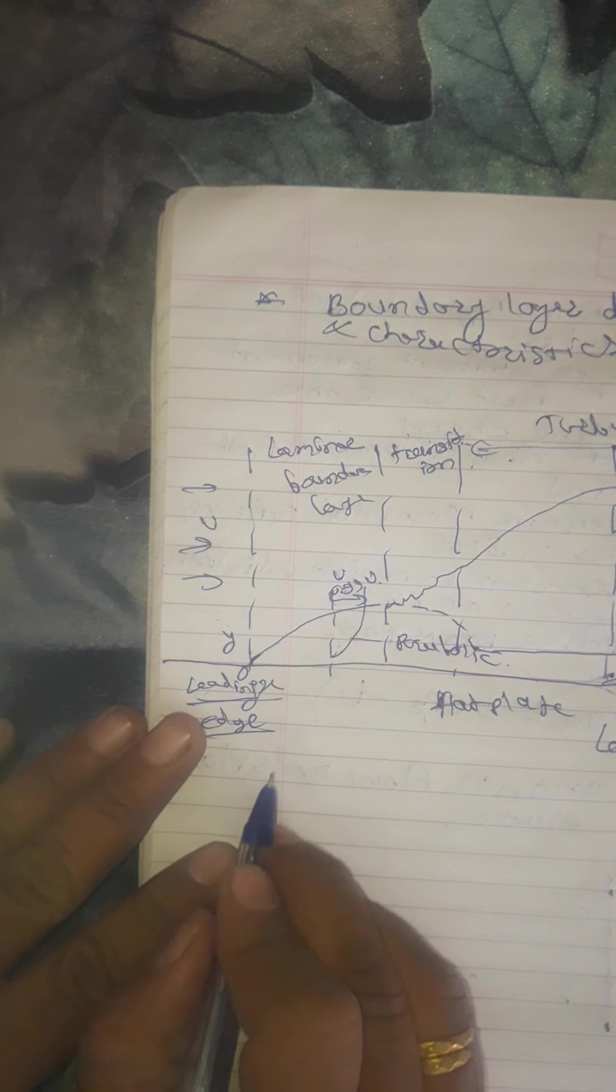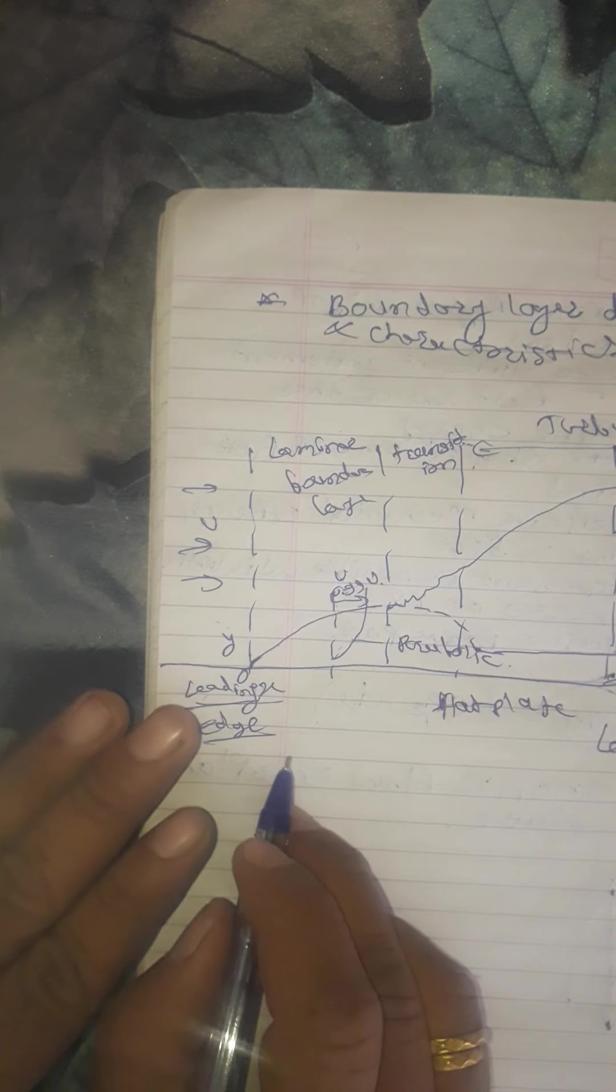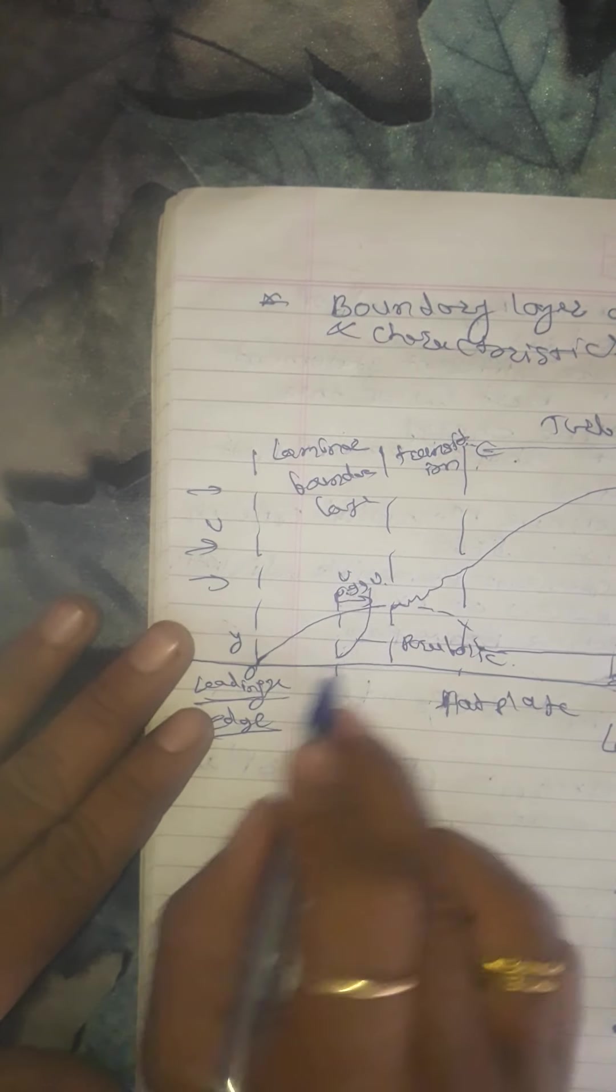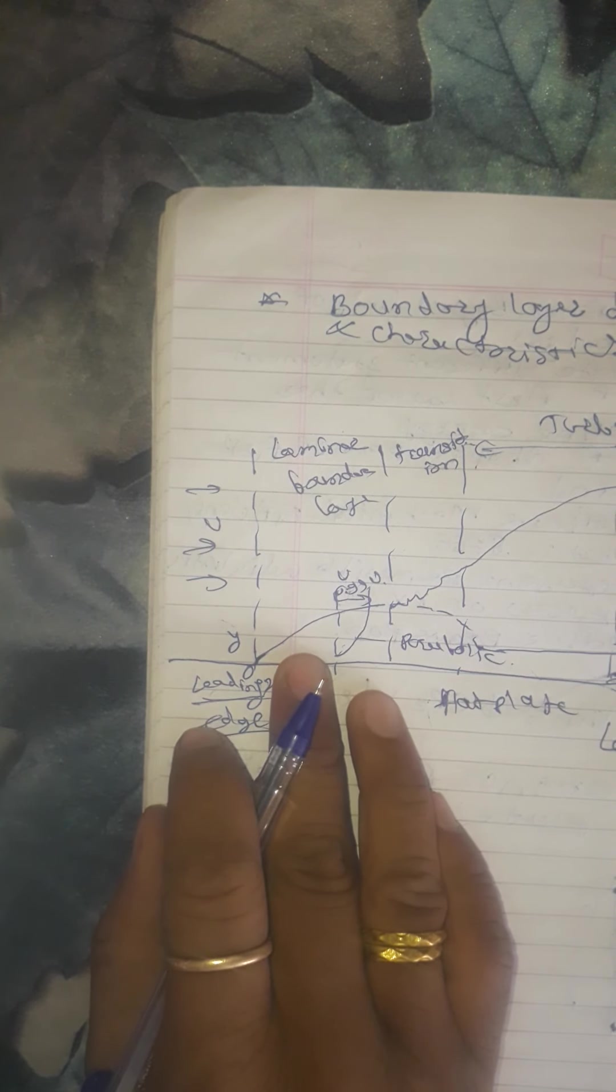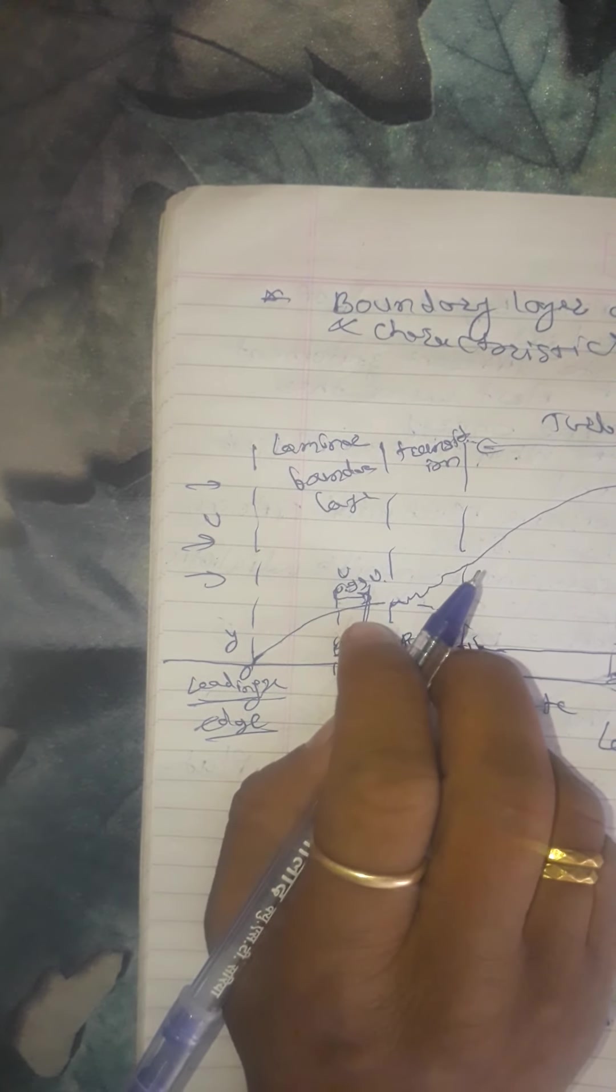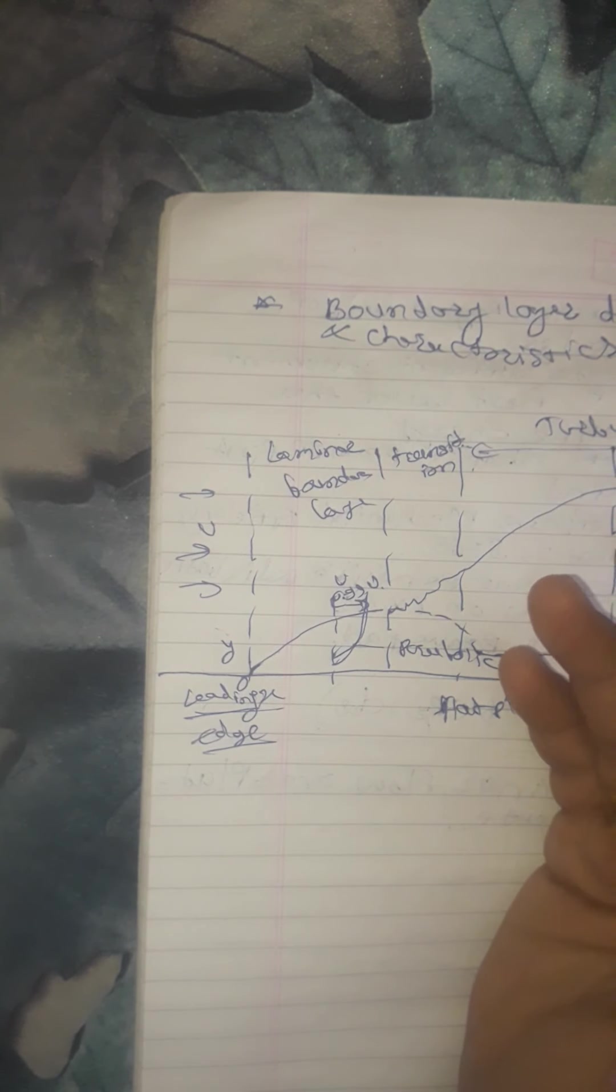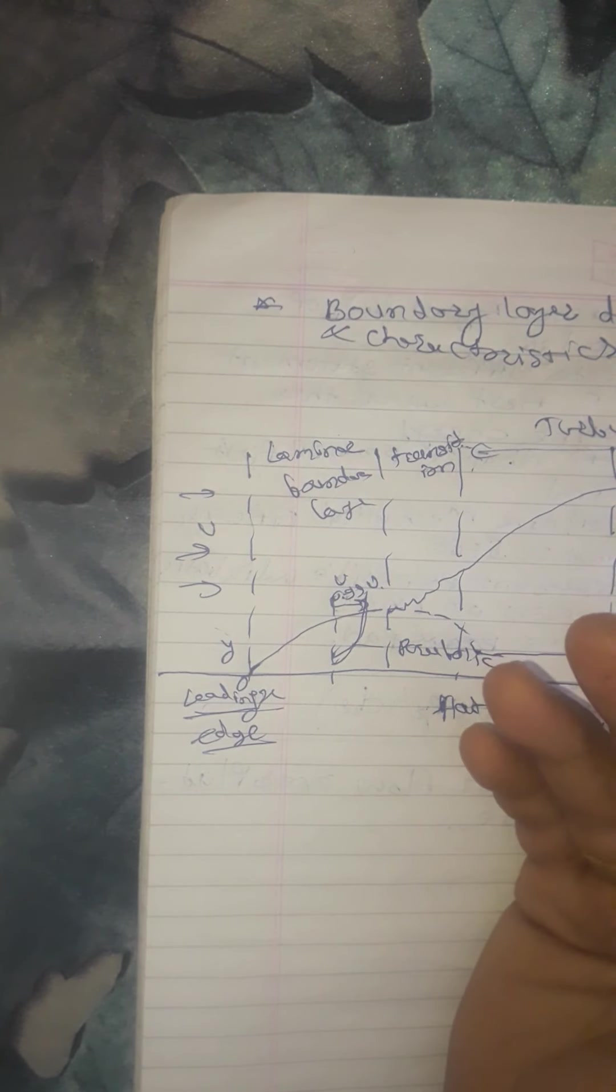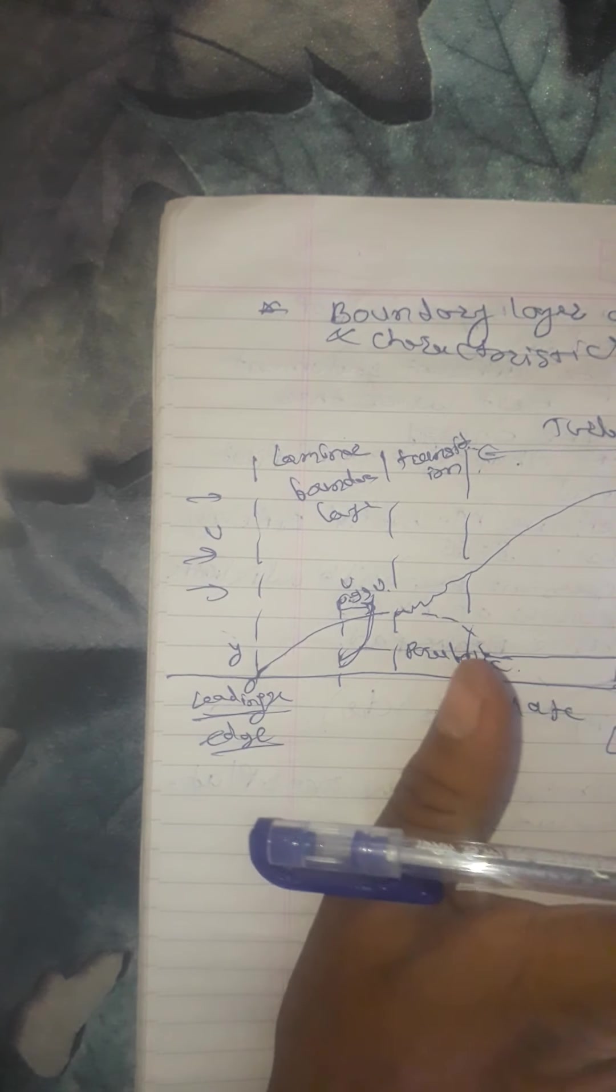Near the leading edge of a flat plate, the boundary layer is wholly laminar. Here the boundary layer is wholly laminar. For a laminar boundary layer, the velocity distribution is parabolic. This is velocity distribution parabolic. The thickness of the boundary layer delta increases with distance from the leading edge x as more and more fluid is slowed down by viscous boundary.